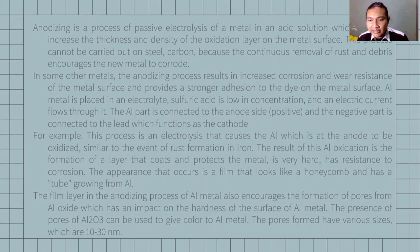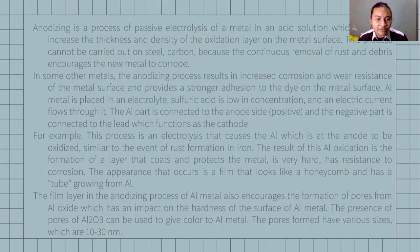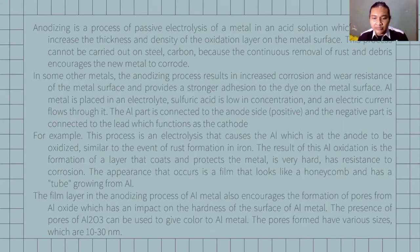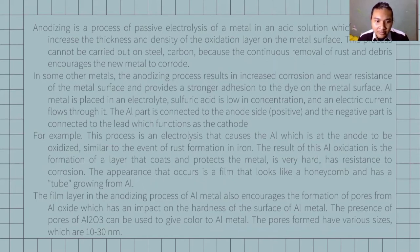The electroelectric fluid flows through it. The aluminum part is connected to the anodized side, positive, and the negative part is connected to the lead which functions as the cathode. This electrolysis causes the aluminum, which is the anode, to be oxidized, similar to the event of crust formation in iron. The result of this aluminum oxidation is the formation of a layer that can protect the metal — it is very hard and has resistance to corrosion.